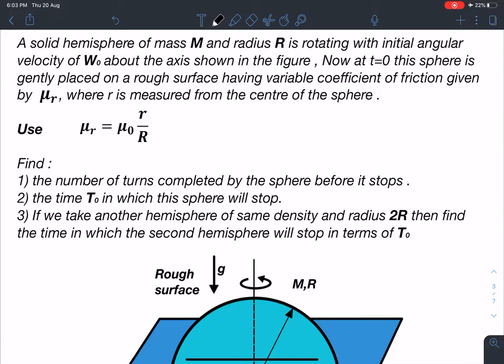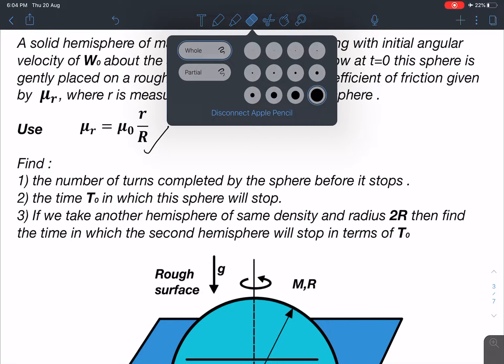The surface has variable coefficient of friction given by mu_r where r is measured from the center of the sphere. We can use this relation: mu_r equals mu naught r divided by R. I have set it in such a way that calculations are going to be very simple.